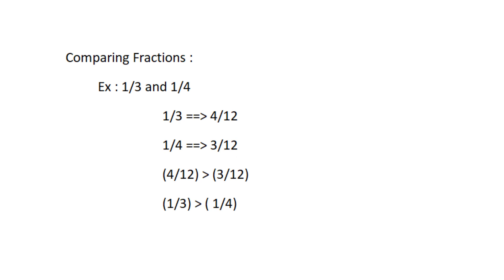We need to make them into like fractions where the denominators are the same. First, find the equivalent fractions of 1/3 and 1/4. The LCM of 3 and 4 is 12. Multiply 1/3 by 4/4 to get 4/12, and multiply 1/4 by 3/3 to get 3/12. Now 4/12 and 3/12 are like fractions. Comparing them, 4/12 is greater, so 1/3 is the greatest number.